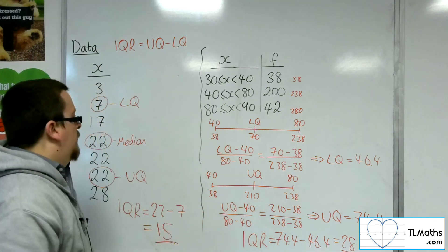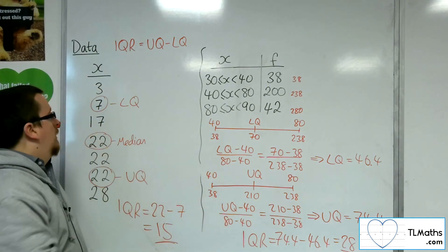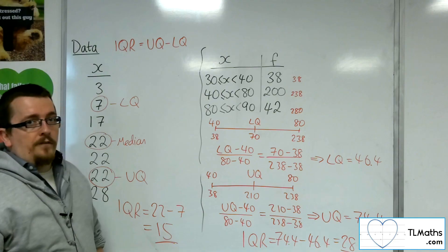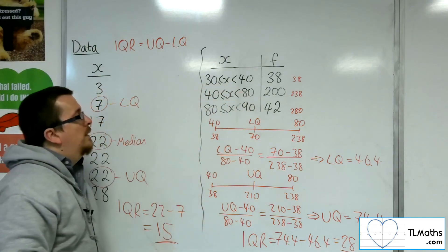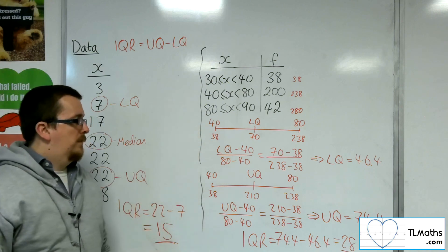So that is how we can work out the interquartile range from a discrete set of data, like that, or a grouped frequency, grouped continuous frequency table, like that.